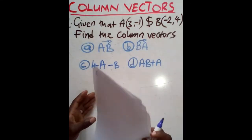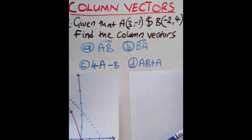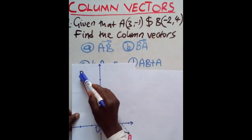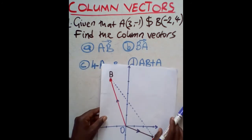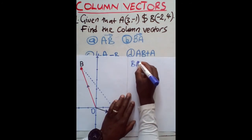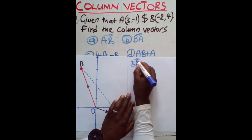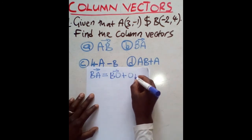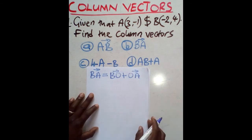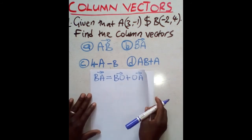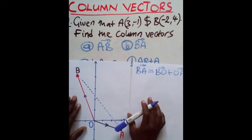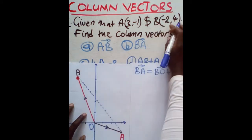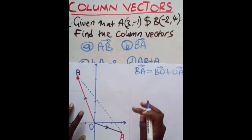AB is the direction from point A to B, but BA is the direction from point B to A — so they are opposites. BA = BO + OA. For BO, you are moving in the opposite direction of OB, so you change the signs: BO becomes (2, -4).